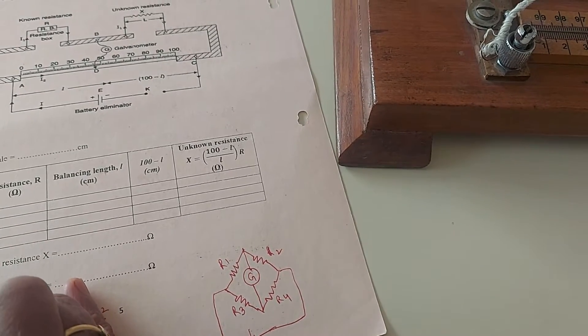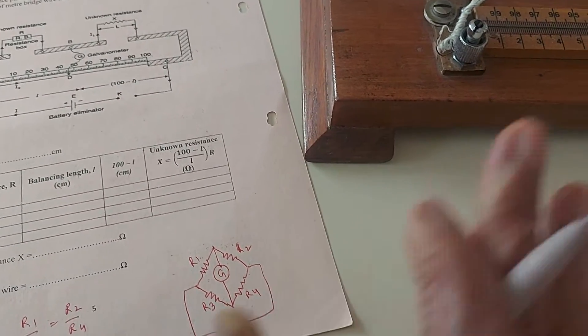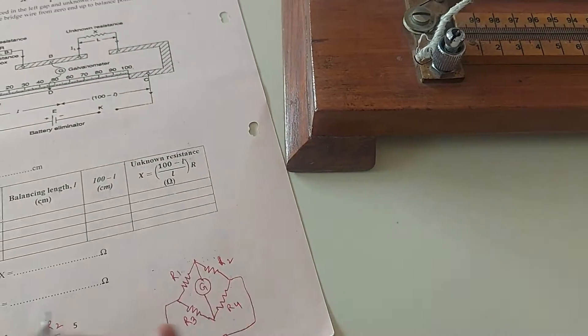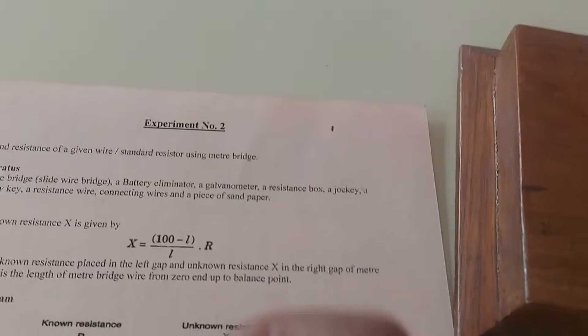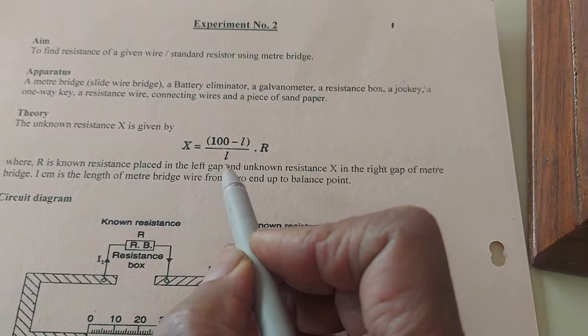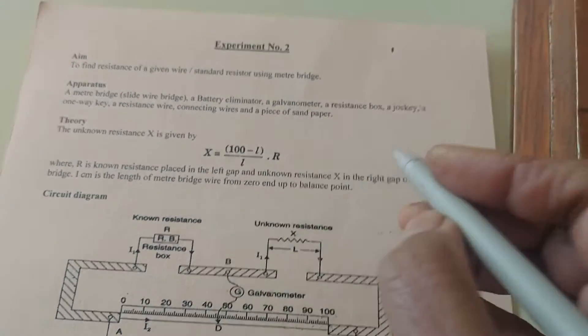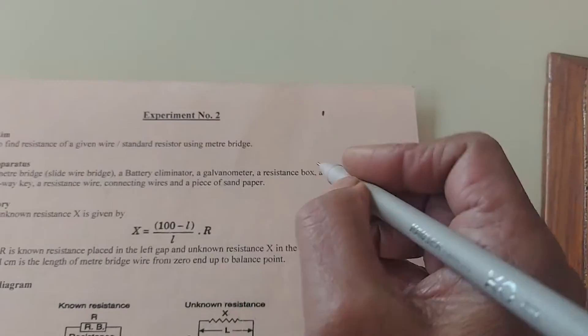R4 and R3 we are measuring with the help of Constantin wire. So that is why this ratio is equivalent to 100 minus L upon L.